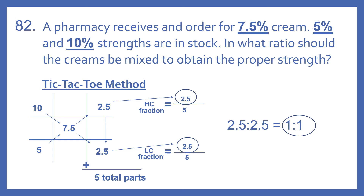Putting our numbers in: the high concentration 10 goes in the upper left, the desired concentration 7.5 goes in the very center, and the low concentration 5 goes in the bottom left. Finding the difference diagonally: the difference between 5 and 7.5 is 2.5, which is our high concentration fraction. The difference between 10 and 7.5 is 2.5, which is our low concentration fraction. So the ratio is 2.5 to 2.5, which equals 1 to 1.